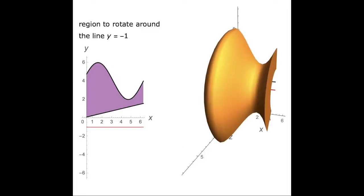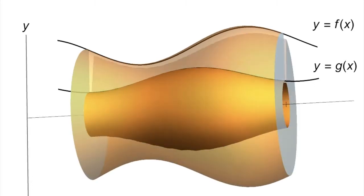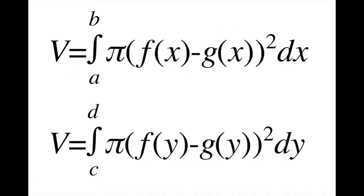We can then conclude, based on the area of a cross section of a washer and what we know about the disc method, that the volume of revolution using the washer method revolving around the x-axis is the definite integral of pi times the quantity f(x) minus g(x), whole quantity squared, with respect to x from a to b. Note that the bounds are in terms of x, so from x equals a to x equals b.